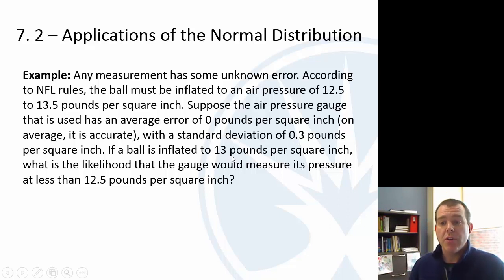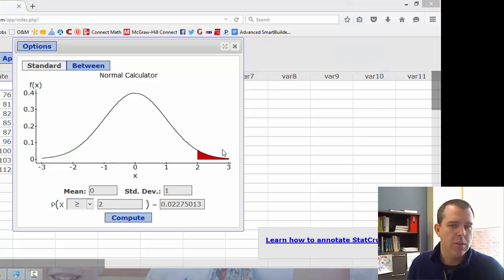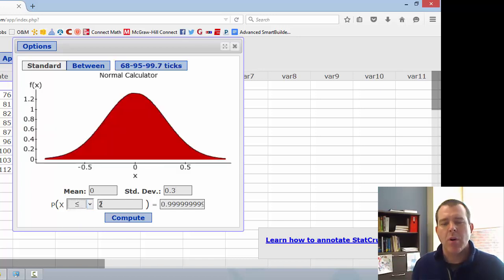But let's suppose it has an average error of zero, so on average it's right, with a standard deviation of 0.3 pounds per square inch. I have no idea if that's actually the standard deviation of the error here. Again, just for the sake of example. Let's suppose that a ball was inflated to 13 pounds per square inch. So ideally if we measured it, we measured it to be 13, but we might measure it a little low, a little high. Question is, what is the likelihood that the gauge would measure its pressure at less than 12.5? So basically, what is the likelihood if these made up number, if this made up standard deviation is true, what is the likelihood that it would measure to be underinflated? So let's go to StatCrunch. There we go. So we said, if we look at our error, the average error is zero, and the standard deviation is 0.3. So we want to know what's the probability that we're going to be below 12.5 pounds per square inch.